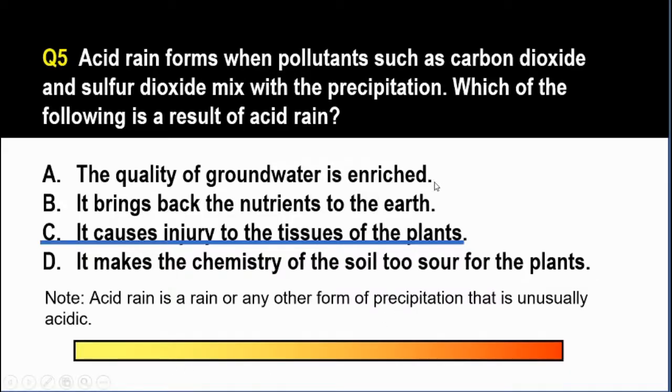A is incorrect. In fact, acid rain damages our water sources because it may cause the pH of our water source to go below the normal range. And that can be actually deadly to aquatic life.